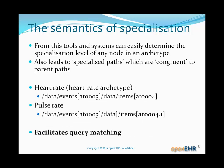From this code syntax system, tools and systems can easily determine the specialization level of any node in an archetype. It also leads to specialized paths which are congruent to parent paths. For example, a parent archetype — the heart rate archetype — has a path, and the pulse rate child archetype has a path that is nearly the same except that it's got AT0004.1 as the final predicate. You can probably guess how software and tooling can match nodes based on a query containing the first path. This is one of the things that enables query matching.